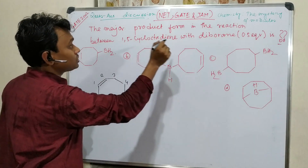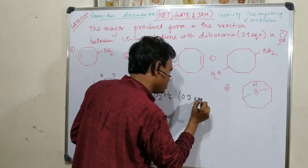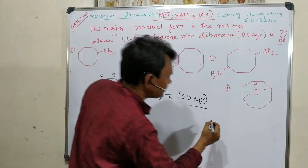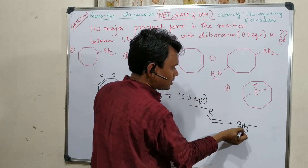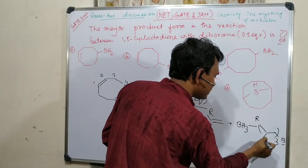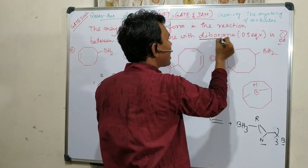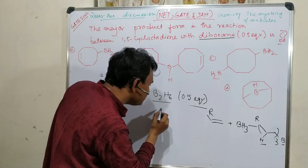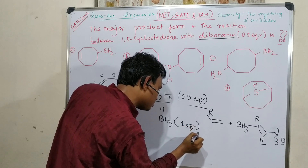Now react this with diborane, B₂H₆, and what they said — 0.5 equivalent. This is the trick of this question. The majority of people will make a mistake here, because we always think of hydroboration as the reaction of a double bond with BH₃. So if it says 0.5 equivalent, instead of looking at the diborane structure we might think that is BH₃ at 0.5 equivalent — that will definitely end up in a mistake. B₂H₆ at 0.5 equivalent means BH₃ is 1 equivalent. That is the important point.